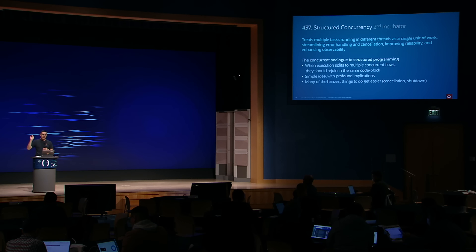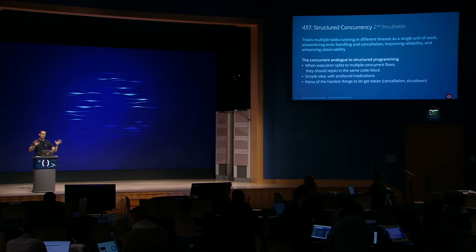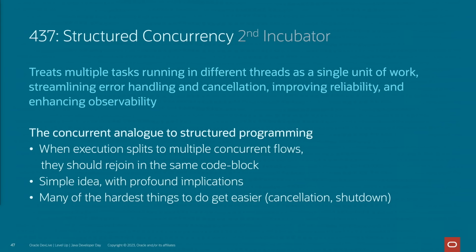JDK 20 also delivers APIs for structured concurrency. The principle is quite straightforward: when sequential code splits into concurrent flows, they must join back in the same code unit. If you write code this way, error handling and cancellation can be streamlined, and it makes it much easier to read and debug. Just as structured programming codified best practices into the language for sequential code, structured concurrency does the same for concurrent code.